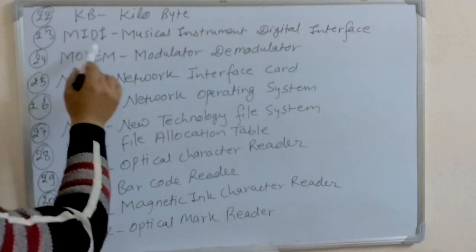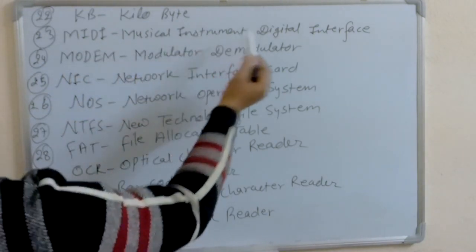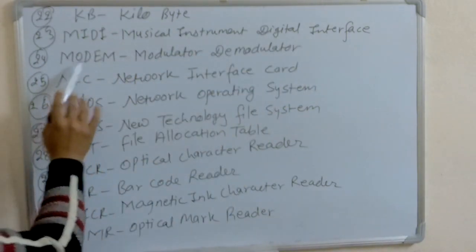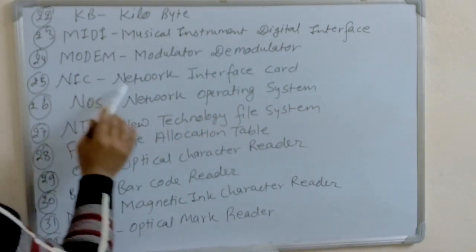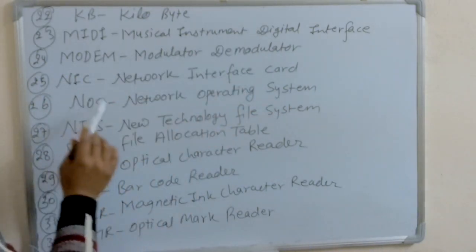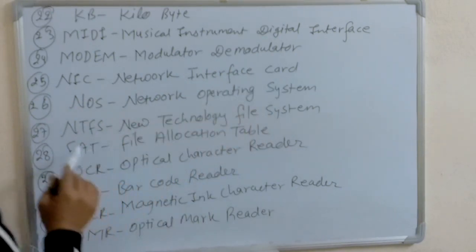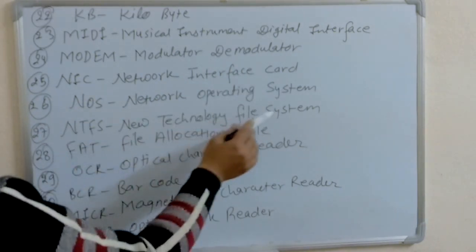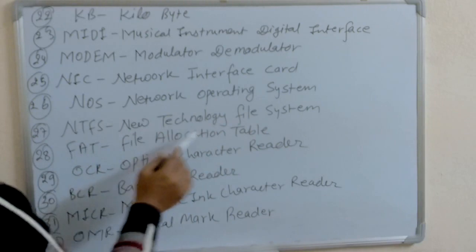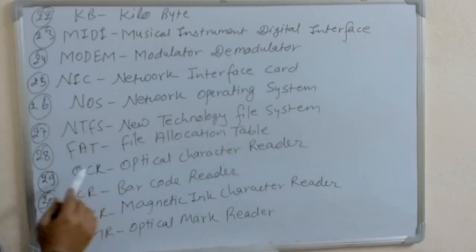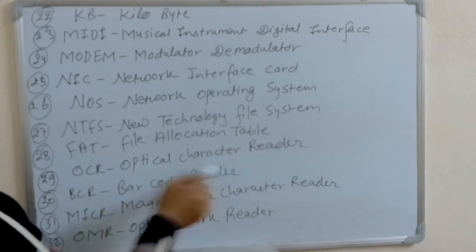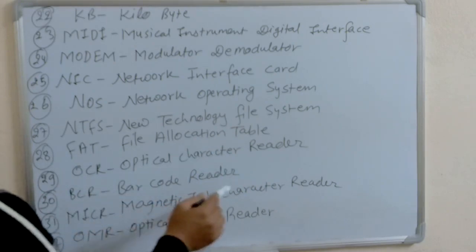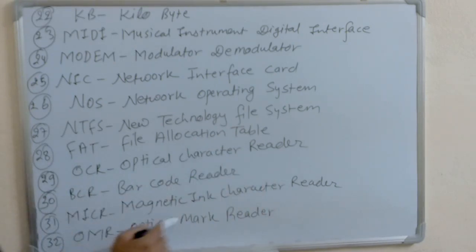Quick recap: KB — Kilobyte. MIDI — Musical Instrument Digital Interface. MODEM — Modulator Demodulator. NIC — Network Interface Card. NOS — Network Operating System. NTFS — New Technology File System. FAT — File Allocation Table. OCR — Optical Character Reader. BCR — Barcode Reader. MICR — Magnetic Ink Character Reader. OMR — Optical Mark Reader.